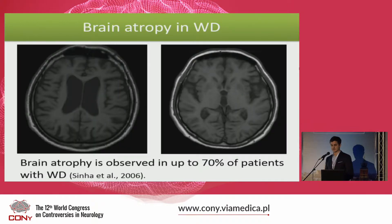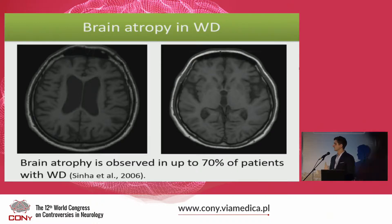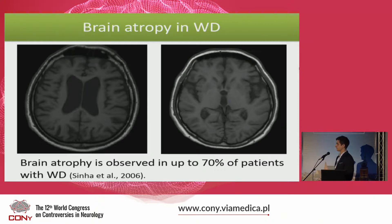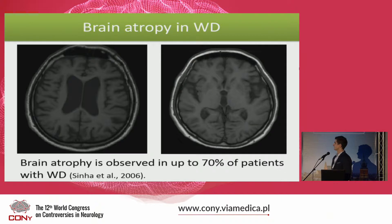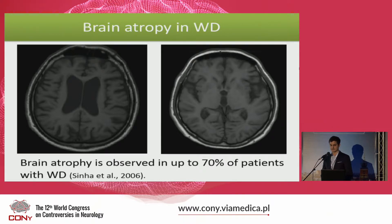Brain atrophy is also very common in Wilson's disease and it can occur in up to 70 percent of patients. In clinical practice we usually assess brain atrophy with the naked eye — for instance, here you can see images of two patients, one with enlarged cerebral ventricles and the other with enlarged cerebral sulci. We also observe that different patients have different degrees of brain atrophy.